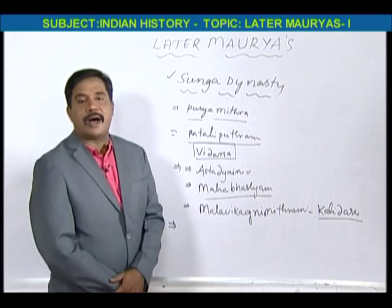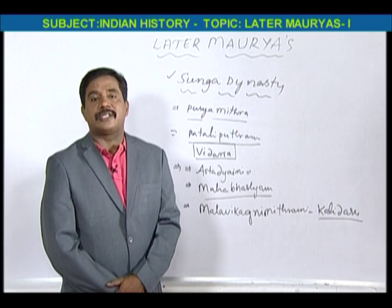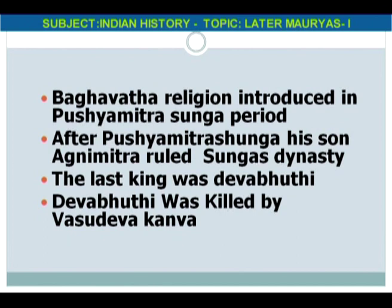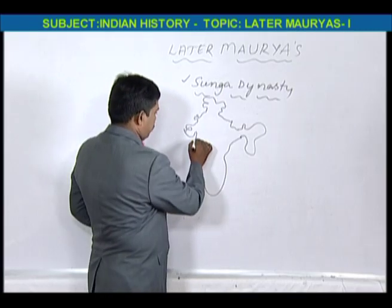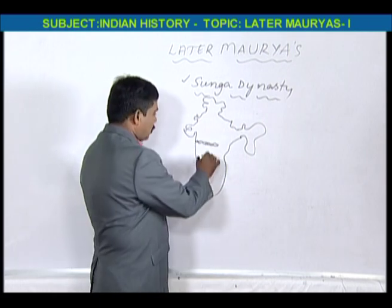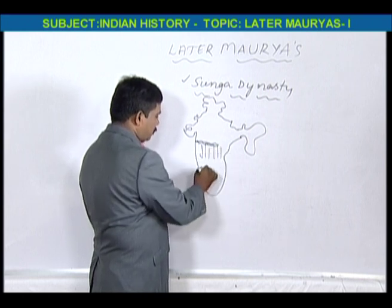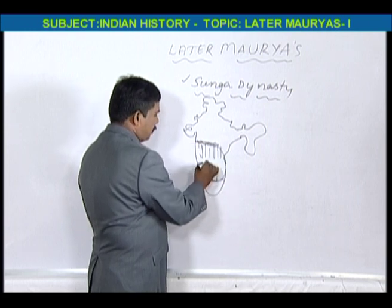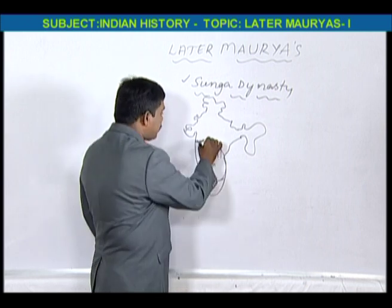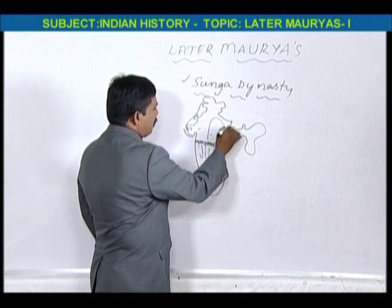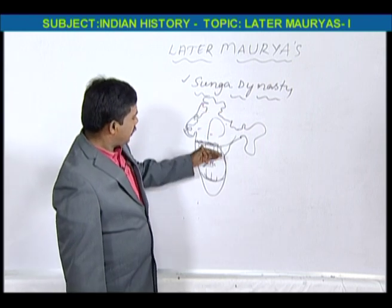In the period of Sungas, Bhagavata religion was introduced — the religion introduced by Sri Krishna or Vasudeva. Those who worship Sri Krishna and Vasudeva follow Bhagavata religion. Below the Vindhya Satpura mountains, this area was totally under the control of Shatavahanas. The area above was under the control of Sungas. So in North India, Shungas ruled, and in South India, Shatavahanas ruled.